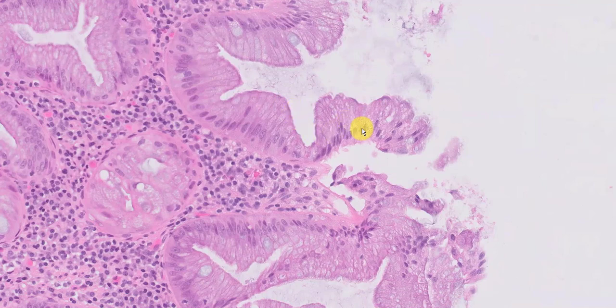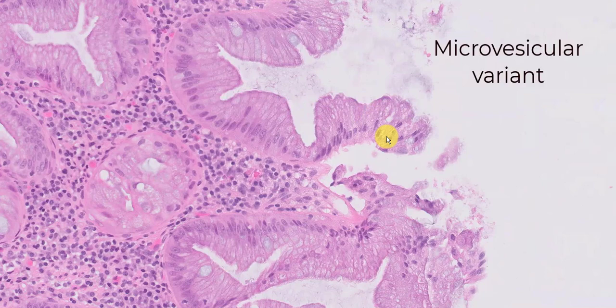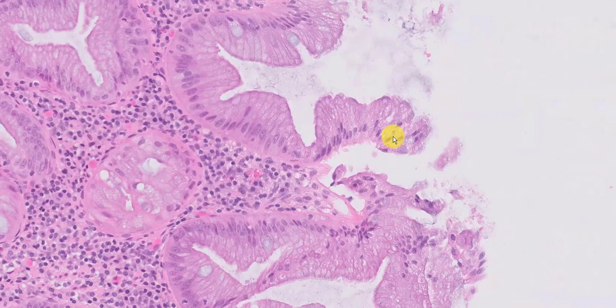The epithelium, particularly on the top, shows a very hypermucinous appearance. The cells are filled with microvesicular vacuoles — this is the so-called microvesicular type of hyperplastic polyp. These cells are thrown up in little tufts, what I sometimes refer to as that very frilly edge to a hyperplastic polyp, and that's another very characteristic feature.